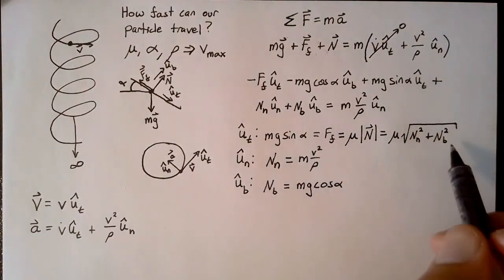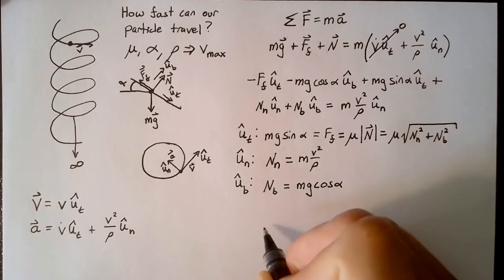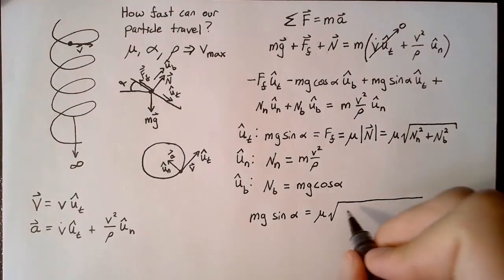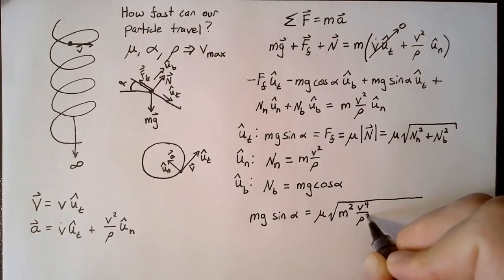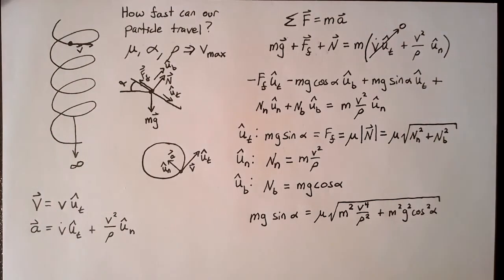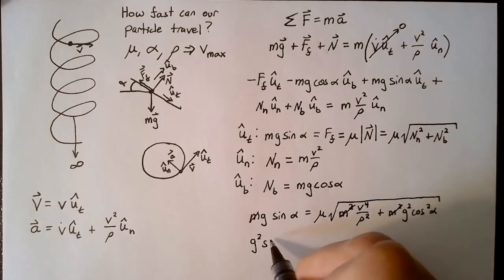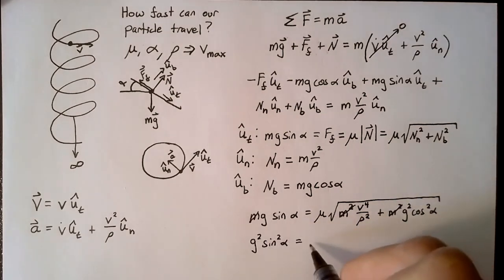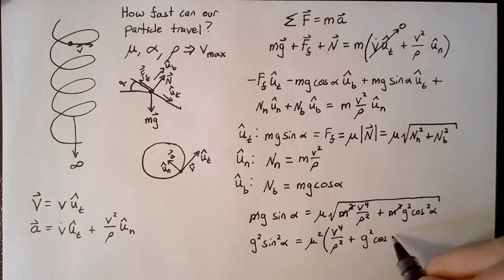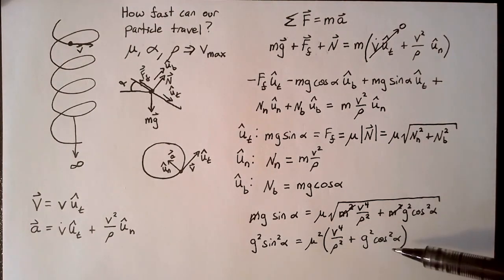So finally, we can write a single equation with all of this together. And that will be mg sine of alpha is equal to mu times the square root of v to the fourth over rho squared plus m squared g squared cosine squared of alpha. Last thing I want to do is take out the mass because it can cancel on both sides of the equation. And so we end up with g squared sine squared alpha is equal to mu squared times v to the fourth over rho squared plus g squared cosine squared alpha. And once we have some values to plug in here, this equation can be solved pretty quickly for our final velocity.